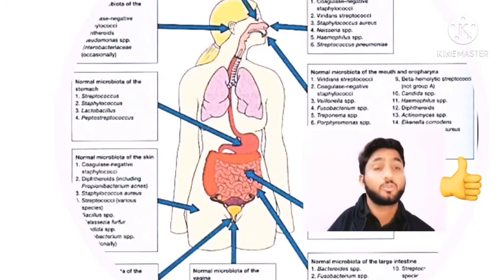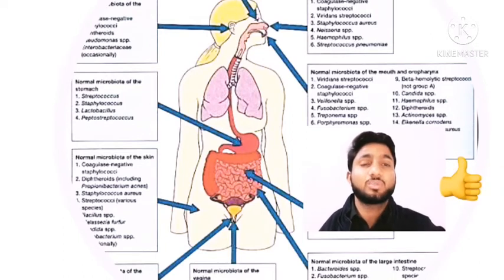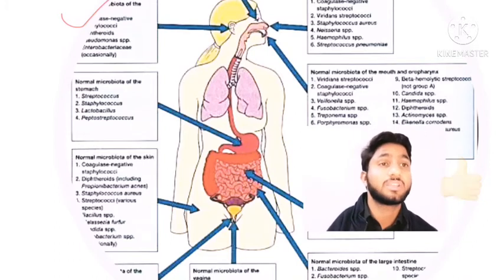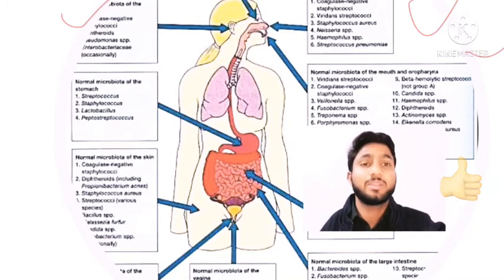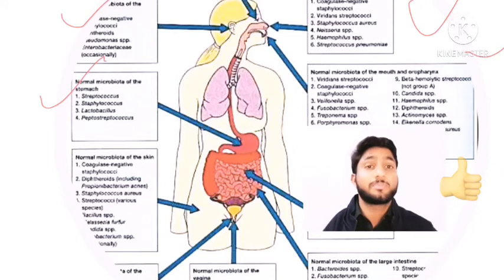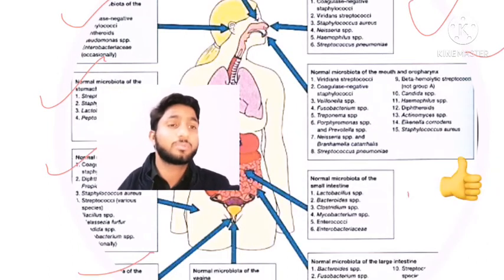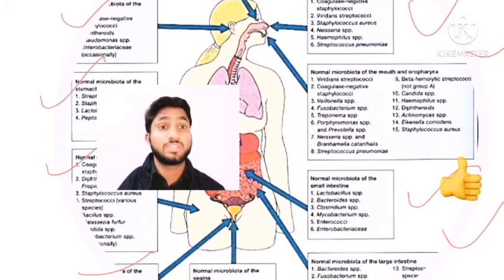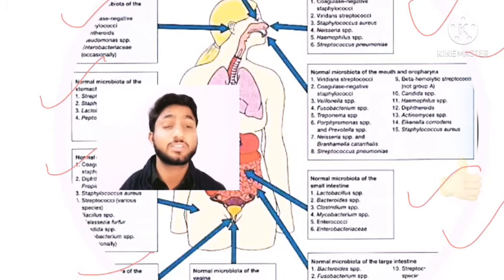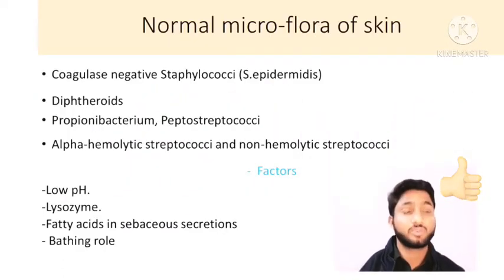Here you can see a detailed picture showing normal microbiota at different bodily sites. The diagram illustrates normal microbiota of the skin, mouth, nose, stomach — including Streptococcus — and normal microbiota of the vagina, urinary tract, small intestine, and large intestine. There are thousands of microorganisms present upon body sites, all playing vital roles.